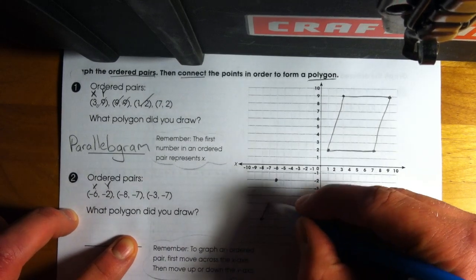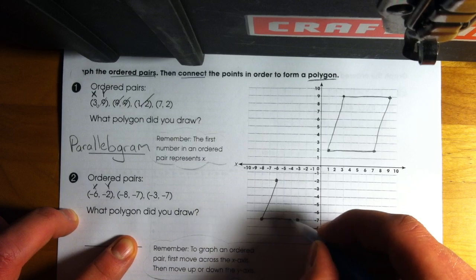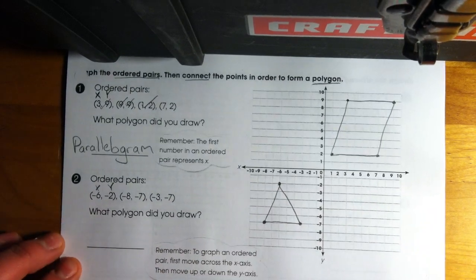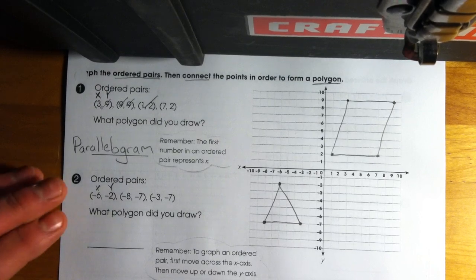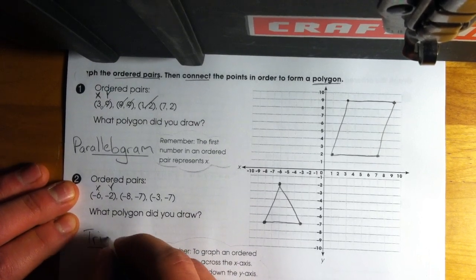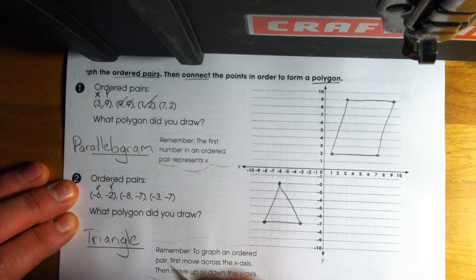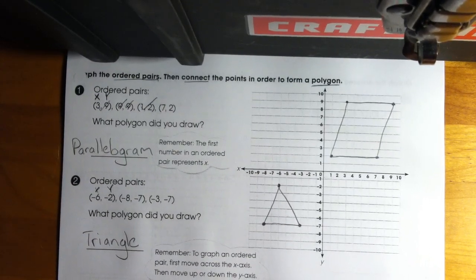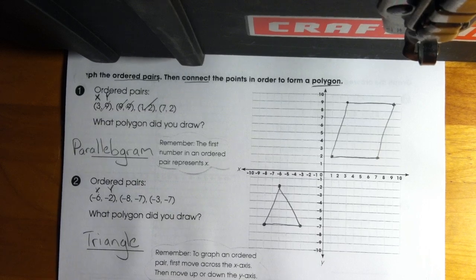And then finally, I've got to connect all our points. So then back to our question, what polygon did you draw? That's simple. We drew a triangle. All right. Remember, continue with all these questions. If you get stuck on anything, please just raise your hand.